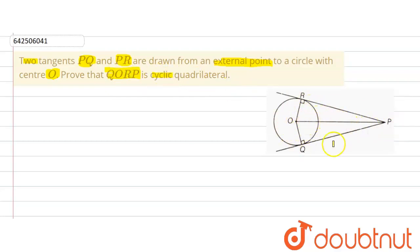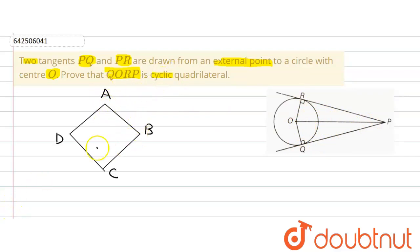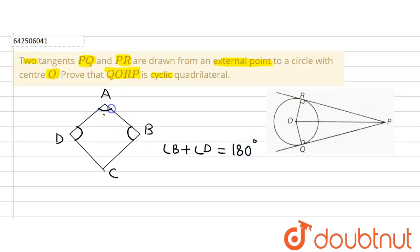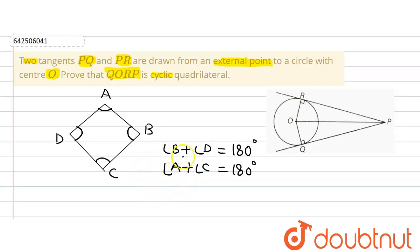We are supposed to prove that QORP is a cyclic quadrilateral. First, let's understand what a cyclic quadrilateral is. Suppose we have a quadrilateral ABCD — it will be a cyclic quadrilateral only when the sum of opposite angles equals 180°, that is angle B plus angle D equals 180°, and angle A plus angle C equals 180°.